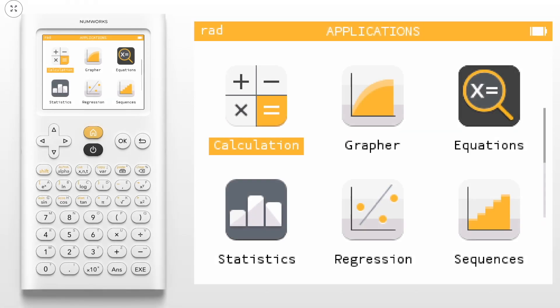Today, we're going to learn how to perform a chi-squared test for goodness of fit on the NumWorks graphing calculator.